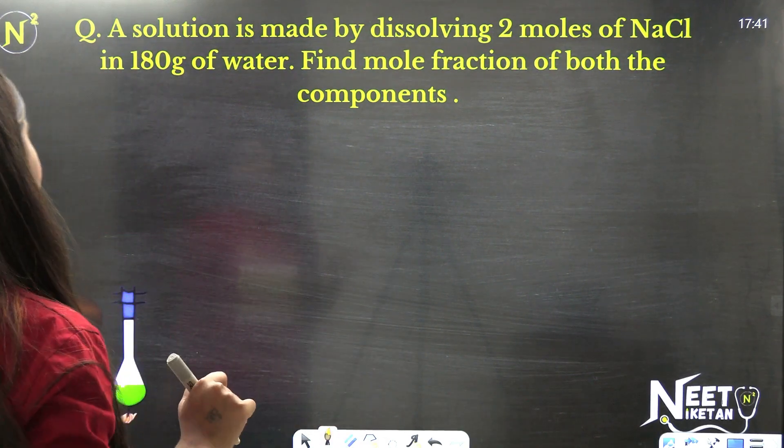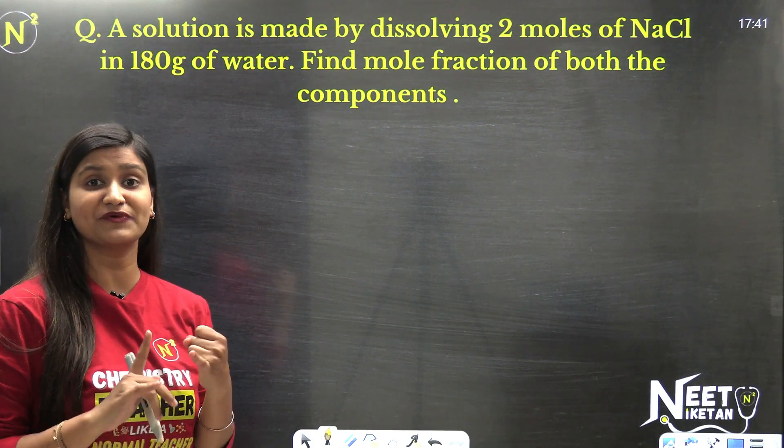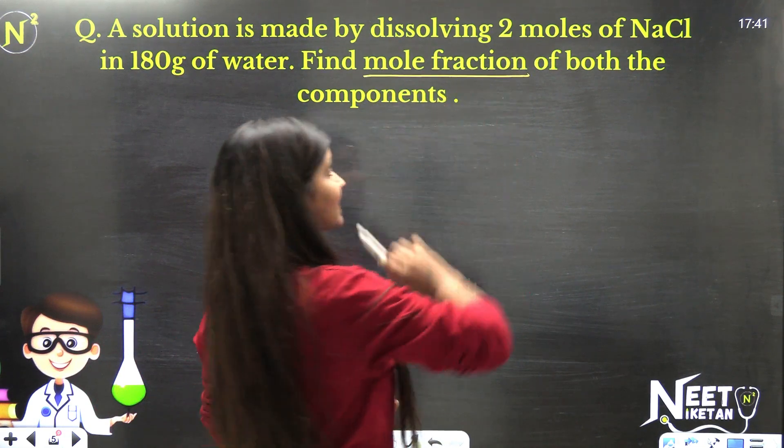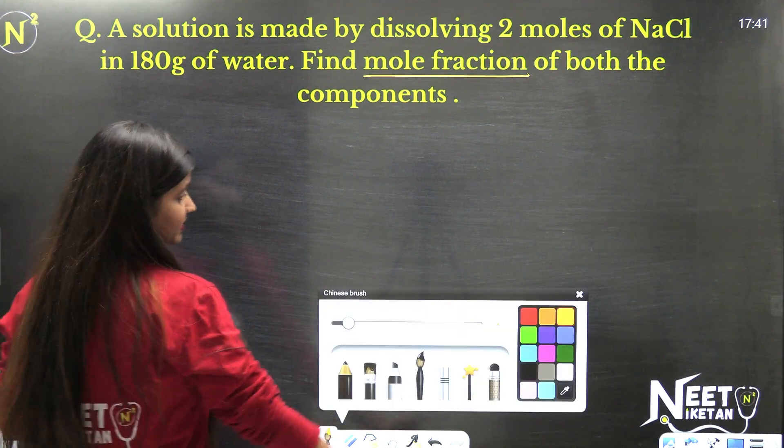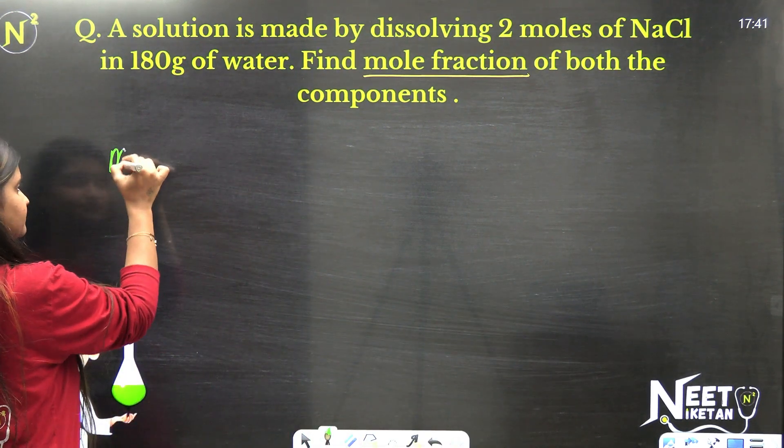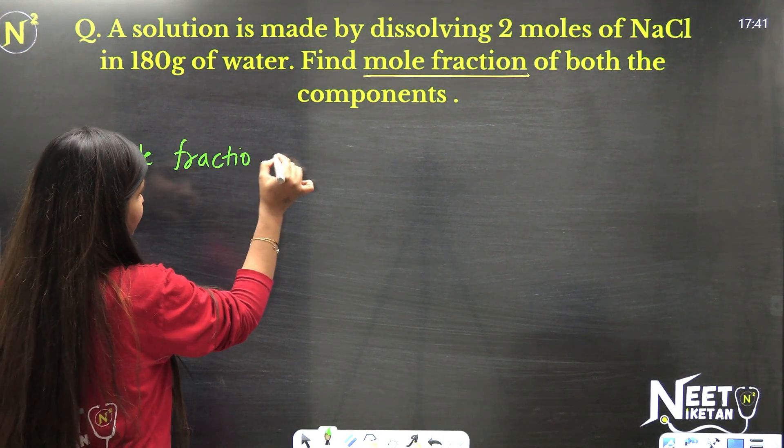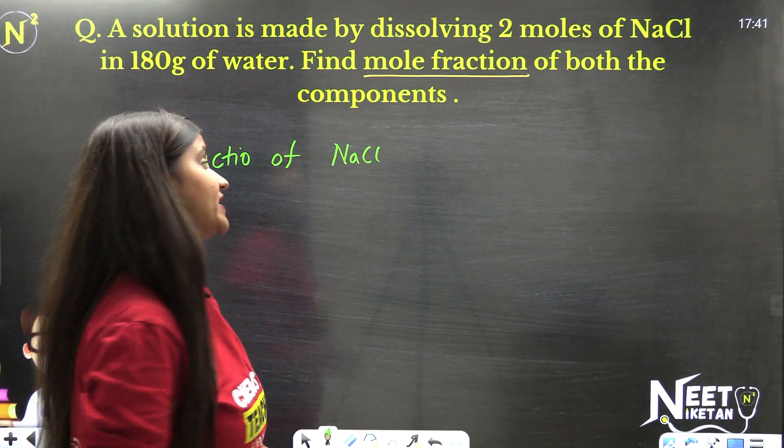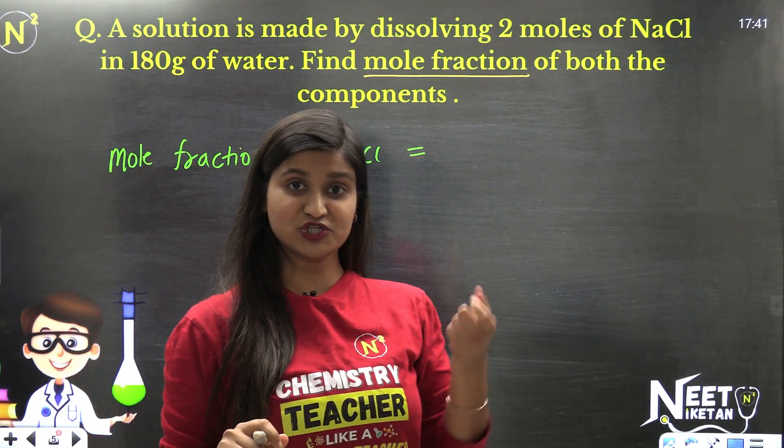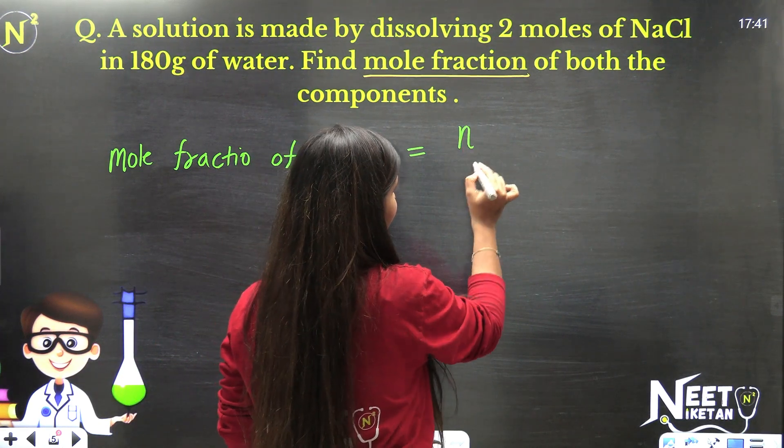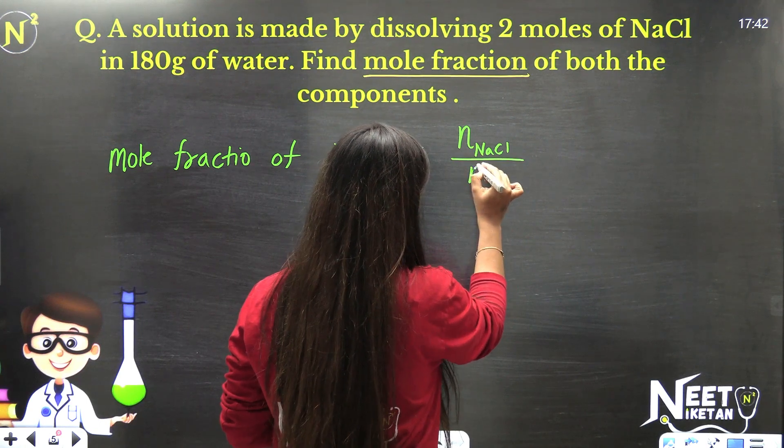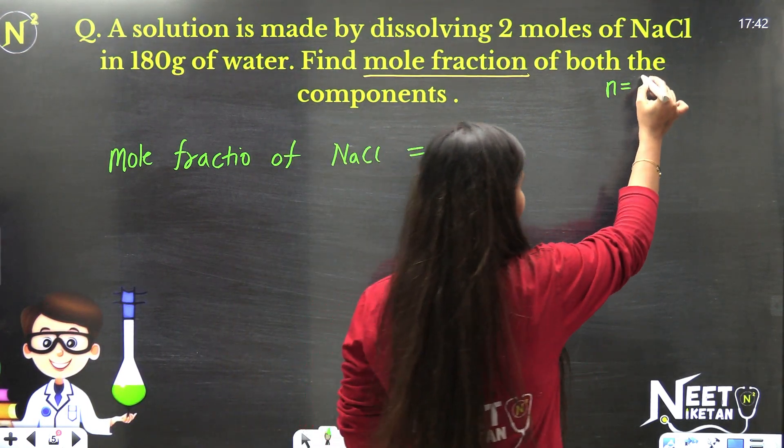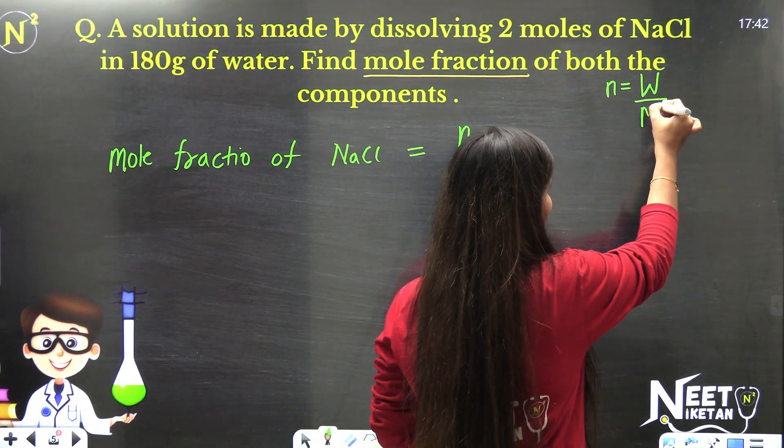Next question - a solution is made by dissolving 2 moles of NaCl in 180 grams of water. Find the mole fraction of both components. We have to calculate mole fraction. We know that mole fraction of, let's talk about NaCl - for this we need number of moles of NaCl over total number of moles. And we know that to calculate number of moles, we need given mass of that component over its molecular mass.